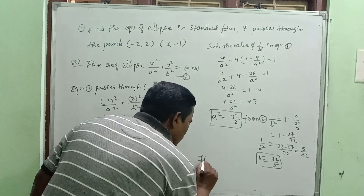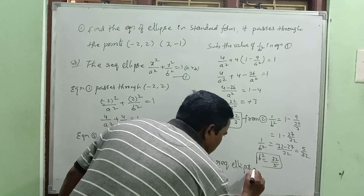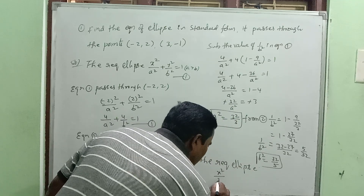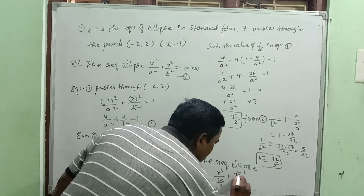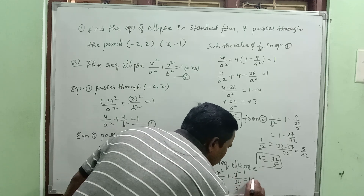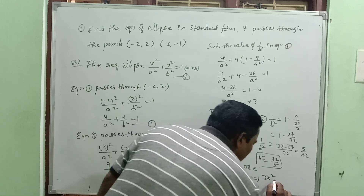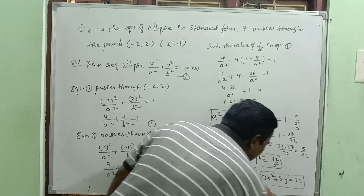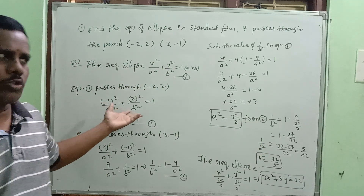The required ellipse is x squared by a squared plus y squared by b squared equal to one. Substituting a squared equals 32 by 3 and b squared equals 32 by 5, we get x squared divided by 32 by 3 plus y squared divided by 32 by 5 equal to one. Taking LCM as 32, the required ellipse is 3x squared plus 5y squared divided by 32 equals one. This is the required ellipse. Very important — passing through the two given points.